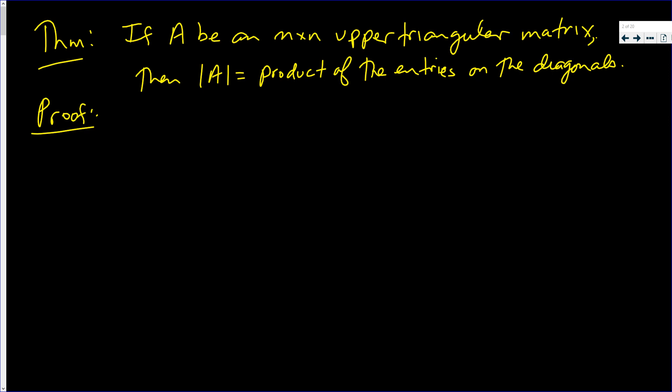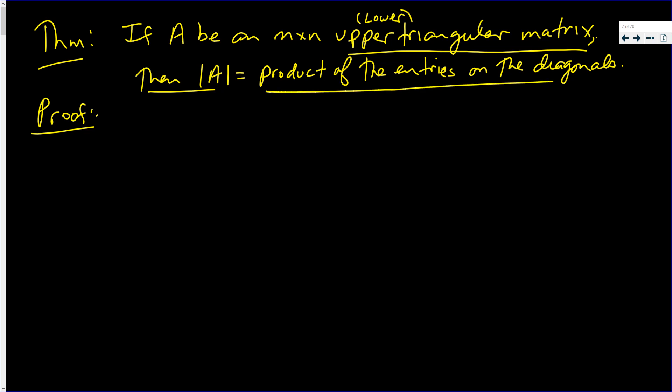This video is going to show that if A is upper triangular or even lower triangular, then the determinant of A is just the product of the entries on the diagonal. You just multiply the entries on the diagonal and you have the determinant.